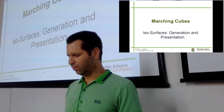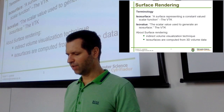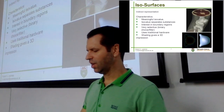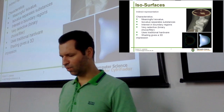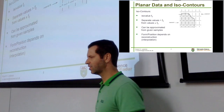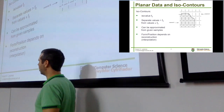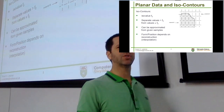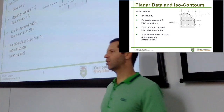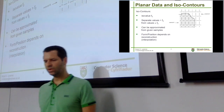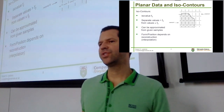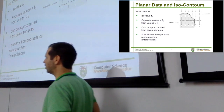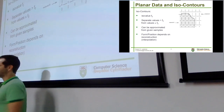Last time we started by talking about the terms isosurface and isovalue. We discussed what isosurfaces are and what they're useful for. Then we finished by discussing the marching squares algorithm in detail. The marching squares algorithm is the 2D version of the marching cubes algorithm, and it's very good to understand this simpler marching squares algorithm before jumping into the 3D marching cubes algorithm.